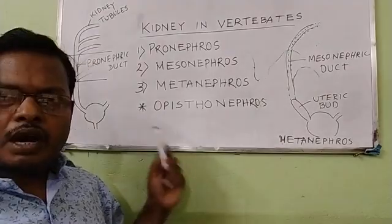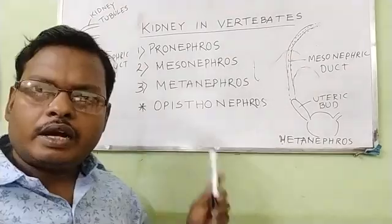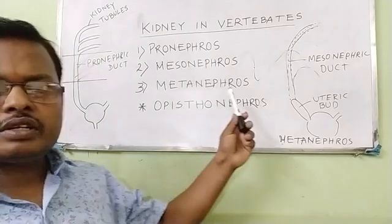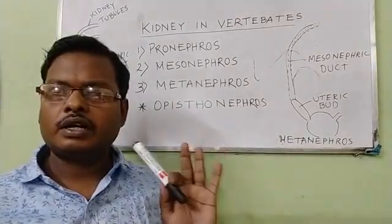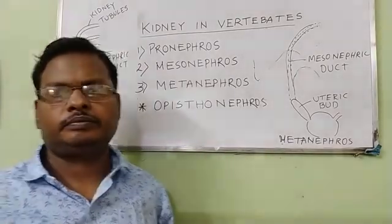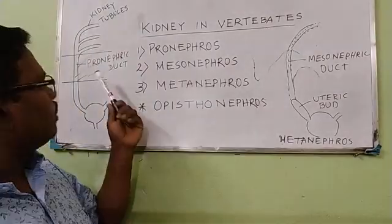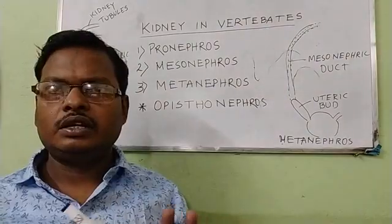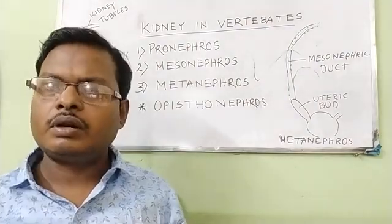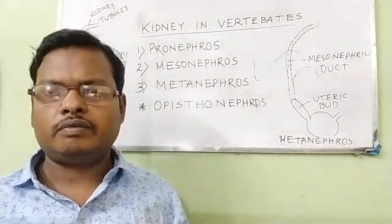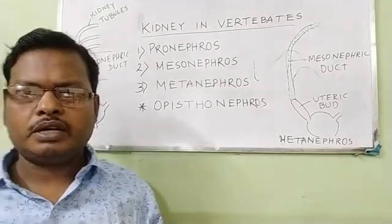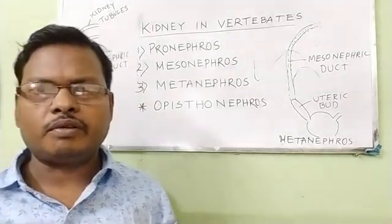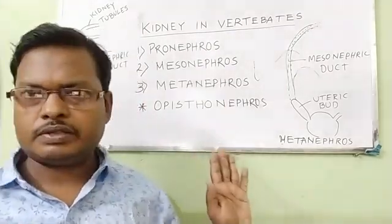In mammals, birds, and reptiles, the Metanephros develops as the adult kidney. However, the original Mesonephros does not simply develop into the Metanephros — its development is slightly different from the other two types.